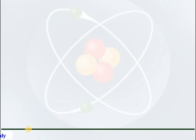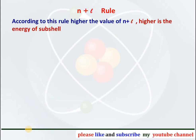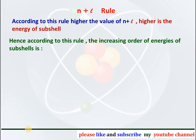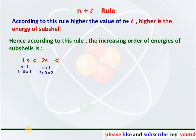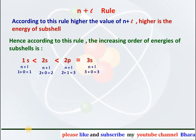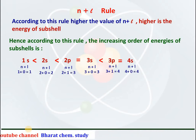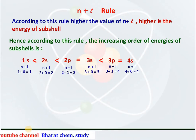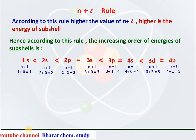According to the N plus L rule, higher is the value of N plus L — that is the principal quantum number plus the azimuthal quantum number — higher is the energy of the subshell. So the increasing order is: 1s with N plus L equal to 1, then 2s with N plus L equal to 2, then 2p with N plus L equal to 3. The energy of 2p equals 3s because for 3s also N plus L equals 3. Then 3p and 4s both have N plus L equal to 4. Then 3d and 4p both have N plus L equal to 5.